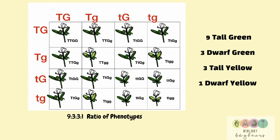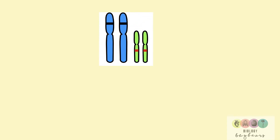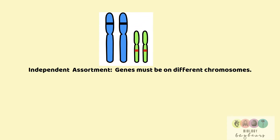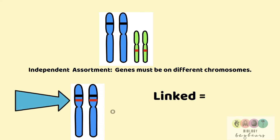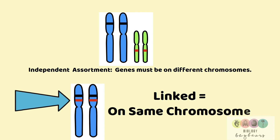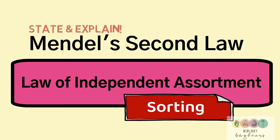The law of independent assortment applies because the genes are located on different chromosomes. If the genes were on the same chromosome — for example, as in linked genes — then the law of independent assortment would not apply and you would not get the same ratios of phenotypes. Be able to state, explain, and recognize the significance of the law: it means greater variation.